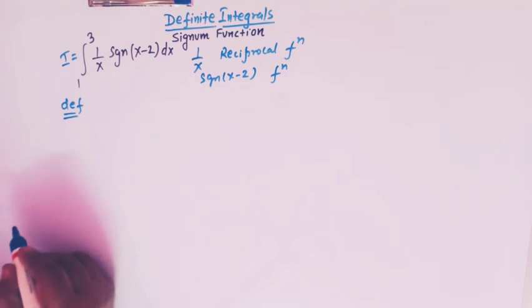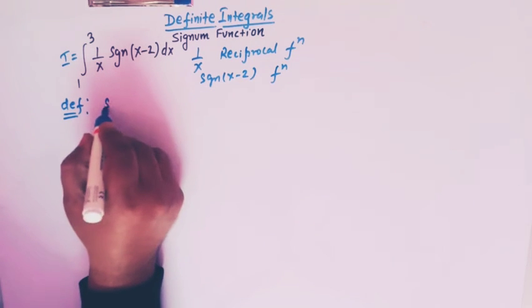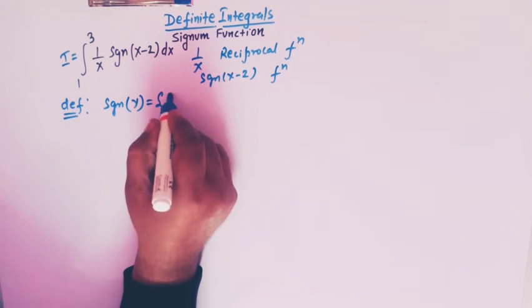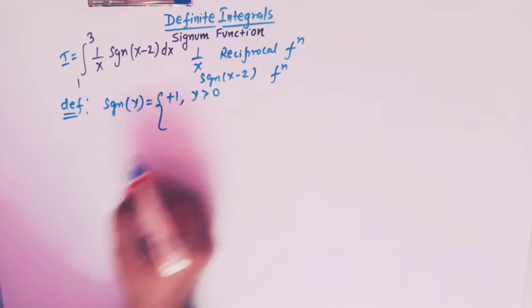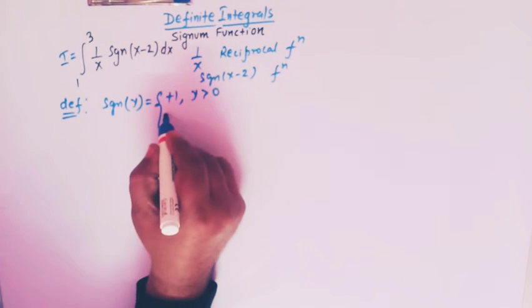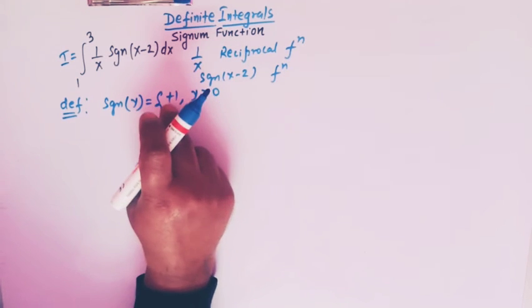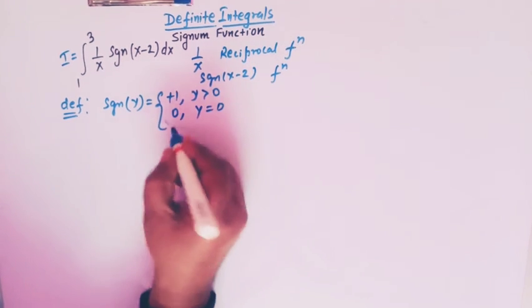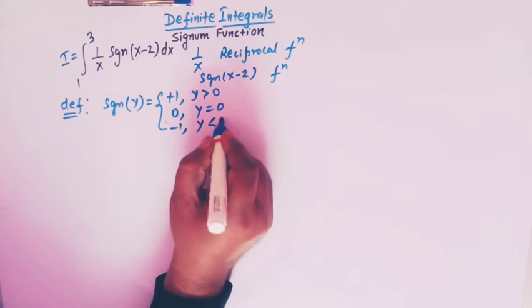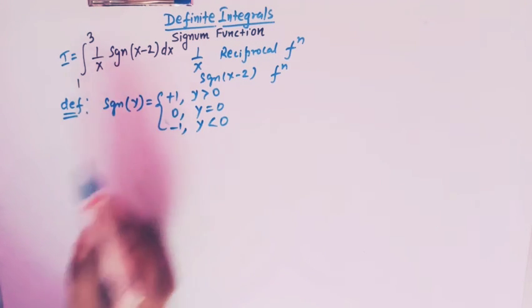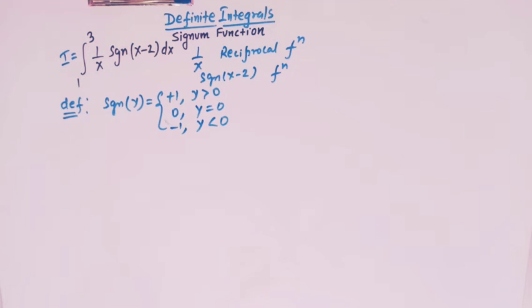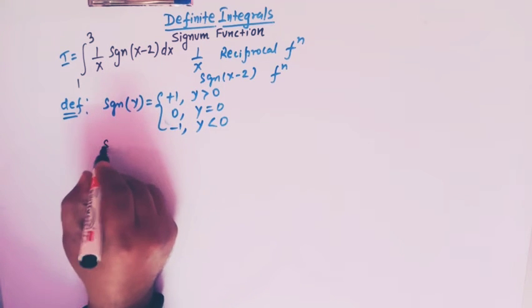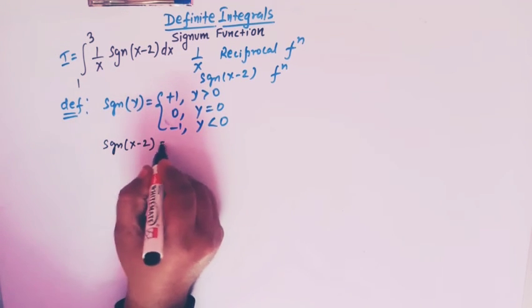Now let us take the definition of the signum function. We know that signum of y is equal to plus 1 whenever y is greater than 0, signum of y is equal to 0 whenever y is equal to 0, and signum of y is equal to minus 1 whenever y is less than 0. This is the standard definition of the signum function.